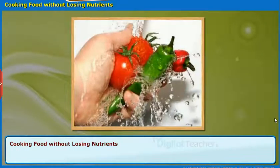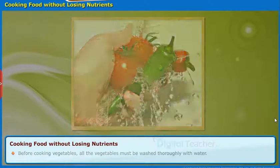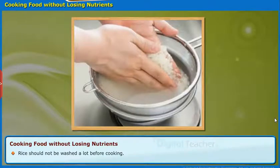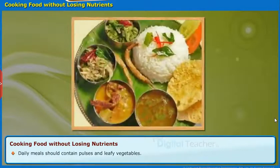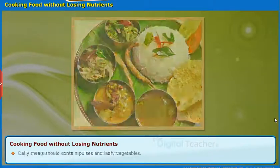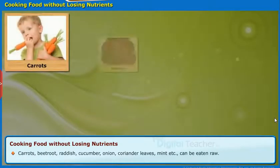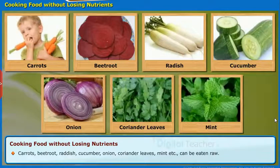Here, let us study how food can be cooked without losing nutrients. Before cooking vegetables, all vegetables must be washed thoroughly with water. If we wash vegetables after cutting, the nutrients present in them will be lost. Rice should not be washed too much before cooking, and the water should not be thrown away after rice is cooked. Daily meals should contain pulses and leafy vegetables. Pulses, vegetables, and meat should not be overcooked. Carrots, beetroot, radish, cucumber, onion, coriander leaves, and mint can be eaten raw.